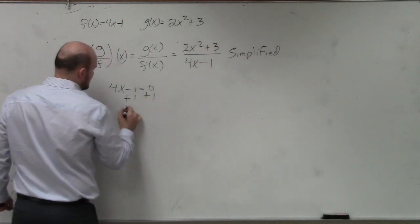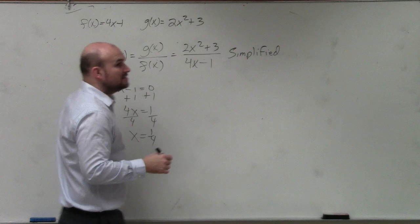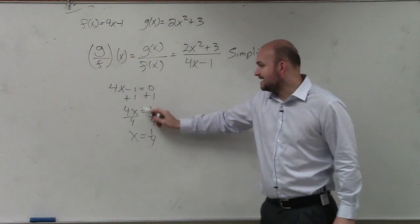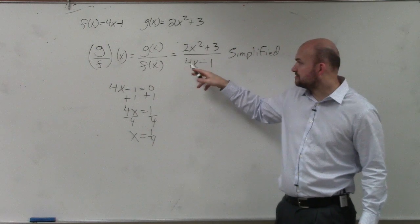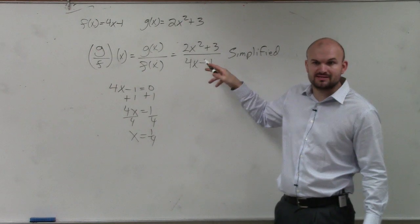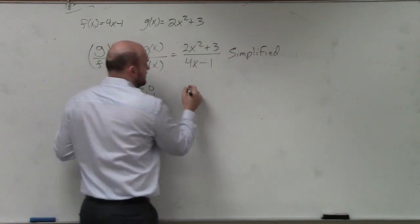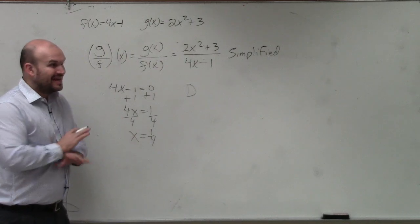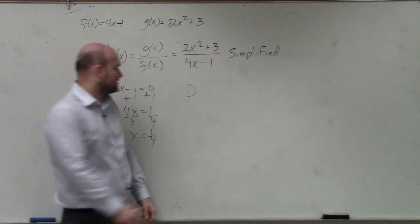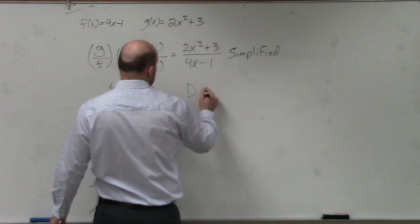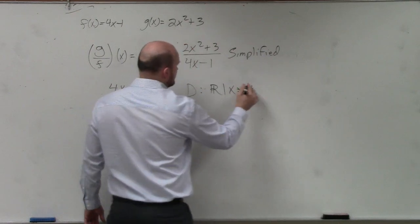So we add 1 to both sides: 4x equals 1. Divide by 4 — x equals 1 fourth. When x equals 1 fourth, we get 0 in the denominator. We don't want 0 in the denominator, because 4 times 1 fourth is 1, and 1 minus 1 is 0. You can't divide by 0. So the only restriction we have is x cannot equal 1 fourth. Every other number is okay. Your domain would be all real numbers such that x cannot equal 1 fourth.